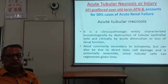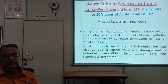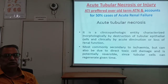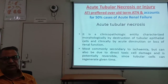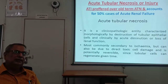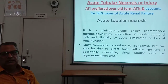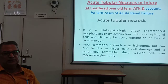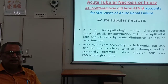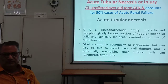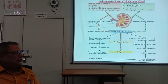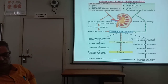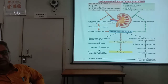Acute tubular necrosis is characterized morphologically by destruction of tubular epithelial cells and clinically by acute diminution or loss of renal function. It is most commonly secondary to ischemia but can also be due to direct damage by toxic agents. Importantly, acute tubular necrosis is potentially reversible since tubular cells have the ability to regenerate given time. The causes are ischemic causes and toxic causes.